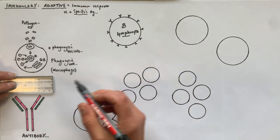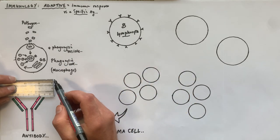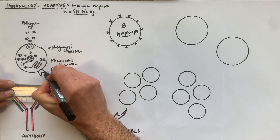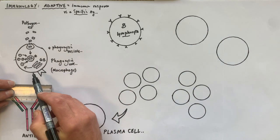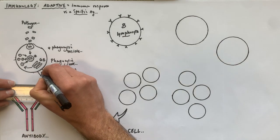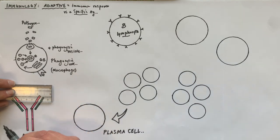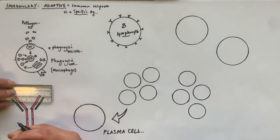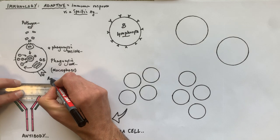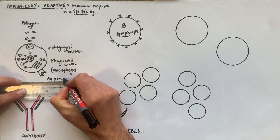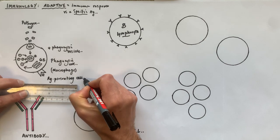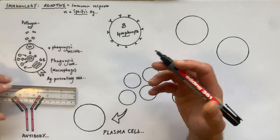The macrophage presents a fragment of the pathogen on its cell membrane via a receptor protein. So the macrophage or phagocytic cell is called an antigen-presenting cell. This is important because the T helper cell has a receptor protein that recognizes that particular presented antigen.